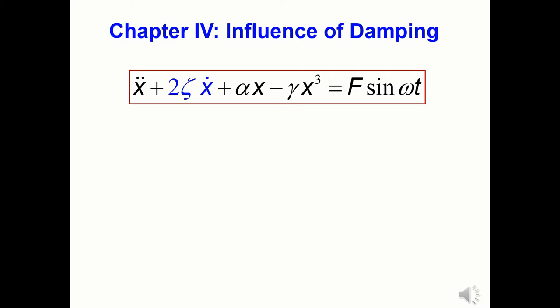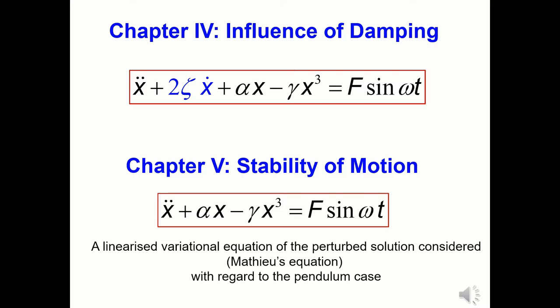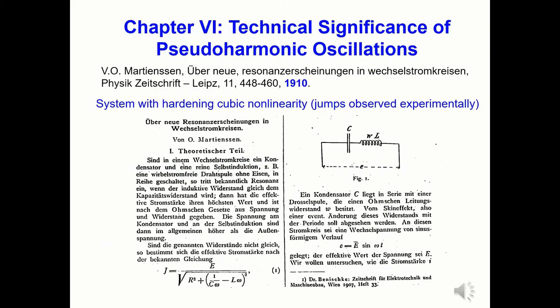Among other topics covered in the book, chapter four investigated the effects of linear viscous damping and chapter five examined the stability of the solutions. In chapter six, Duffing describes the technical relevance of his work and specifically discusses Martiansen's 1910 paper as an example. Let us now take a look at what happened after the publication of Duffing's book. It took some time for his work to become known, and maybe this was because the book was written in German.